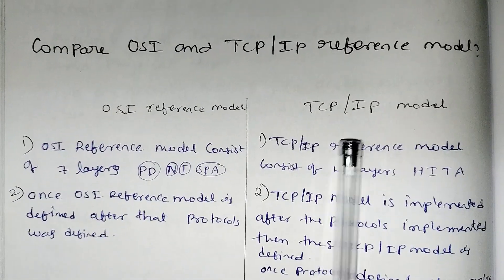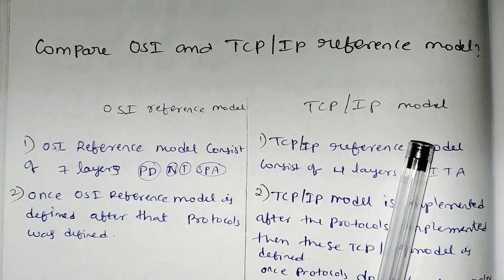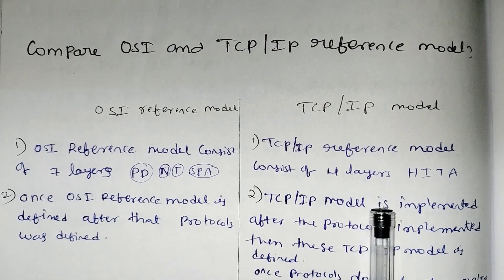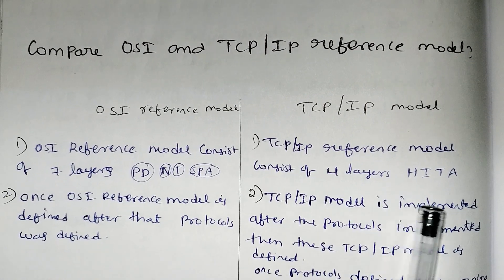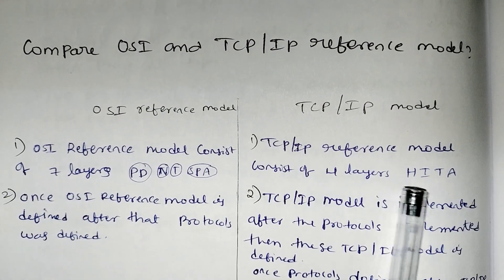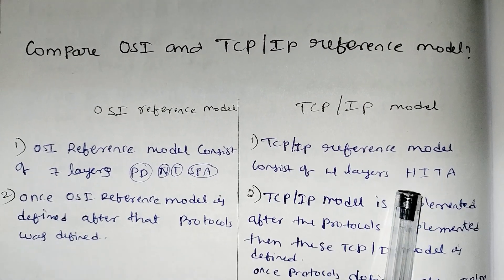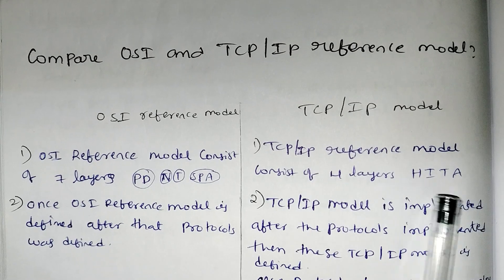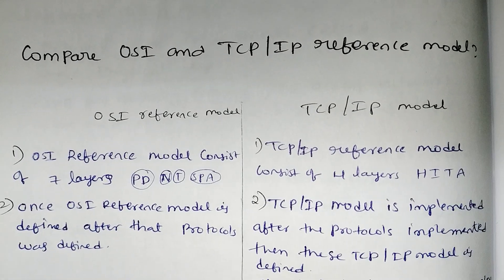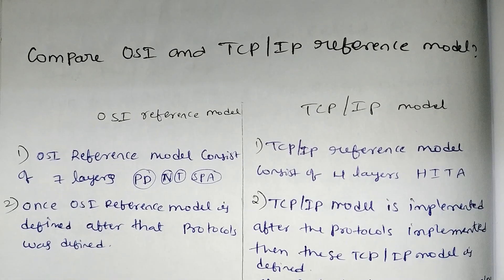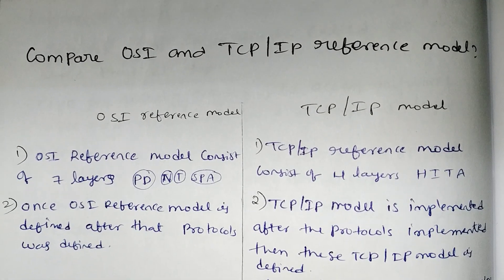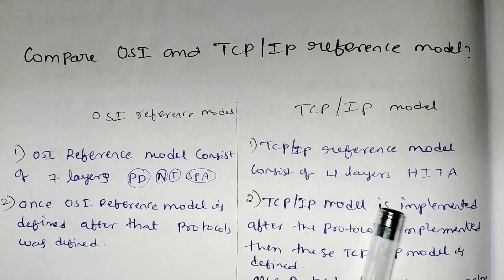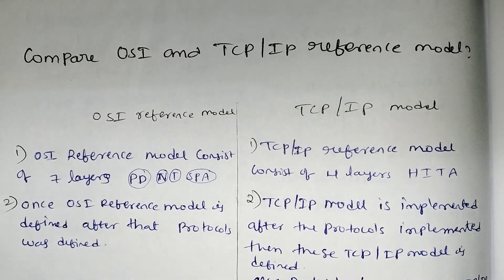Next, TCP/IP model. There are 4 layers: Host-to-Host layer, Internet layer, Transport layer, and Application layer. These layers are in the TCP/IP model.